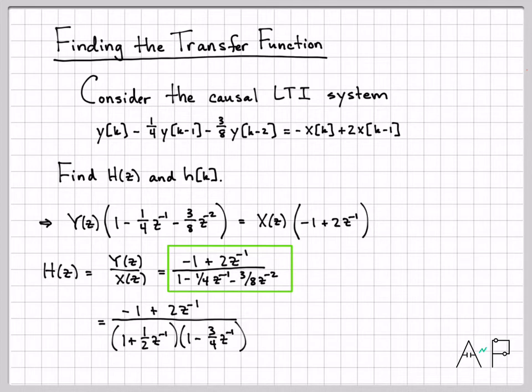First, let's factor the denominator. The denominator does factor nicely into this product. Then I can decompose that as A over the first term plus B over the second term. Now all I need to do is PFE to find the constants A and B.